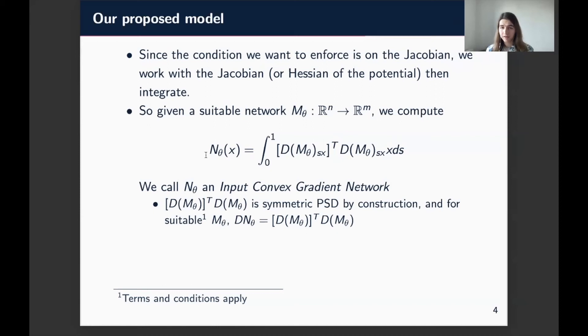So for suitable M theta, the hidden network, the Jacobian of the output of the input convex gradient network is actually given by that matrix itself. So by our theorem, this means that we're actually parametrizing the gradient of a convex function in this way.